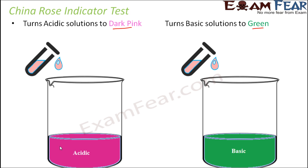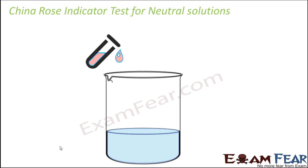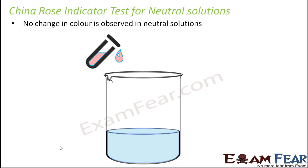And again, in case of the neutral solution, there will be no change in color. So it is a pretty simple, straightforward test using the China Rose. With neutral solution, when you put this indicator, there will be no change in color. The indicators do not really react much with the neutral solution, and that is why there is no change in color.